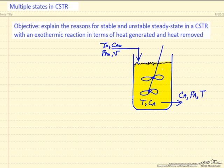In this video we are going to look at the presence of multiple steady states in a continuous stirred tank reactor in which we have an exothermic reaction. We are going to look at a simple case of A reacting to B.